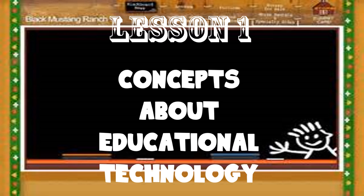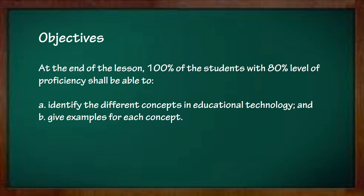Lesson 1: Concepts About Educational Technology. Objectives: At the end of the lesson, 100% of the students with 80% level of proficiency shall be able to: a. identify the different concepts in educational technology, and b. give examples for each concept.